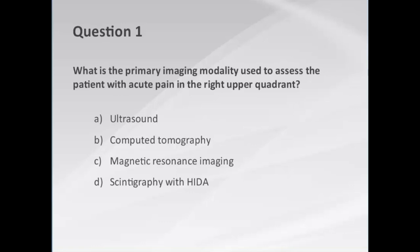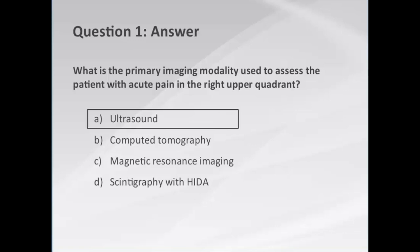What is the primary imaging modality used to assess the patient with acute pain in the right upper quadrant? Is it ultrasound, computed tomography, magnetic resonance imaging, or scintigraphy with HIDA? The answer of course is ultrasound.